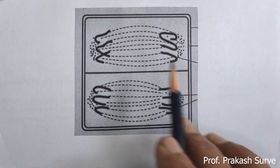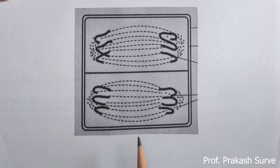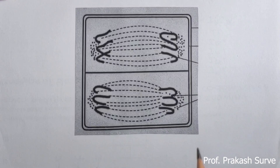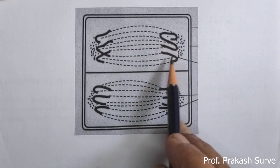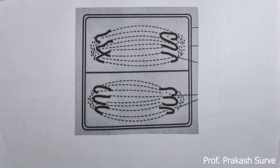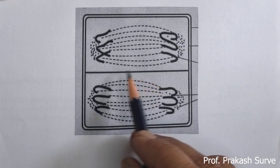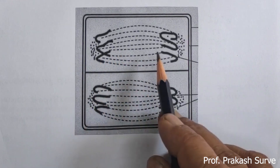Next is anaphase two of meiosis two. What we observe: the centromere divides and the sister chromatids are separated, now called daughter chromosomes. All the sister chromatids shift to both sides. The spindle fibers start condensing, become shorter, and pull all the daughter chromosomes to the opposite poles.